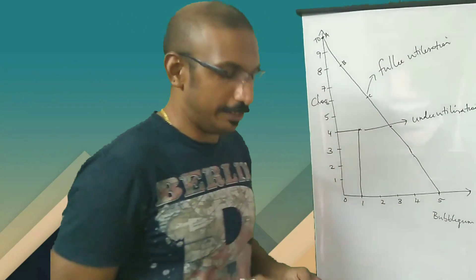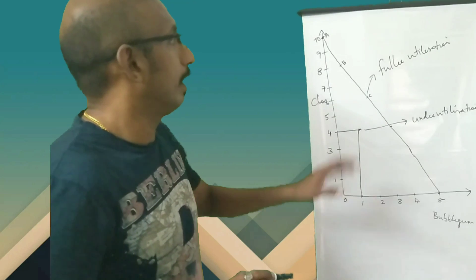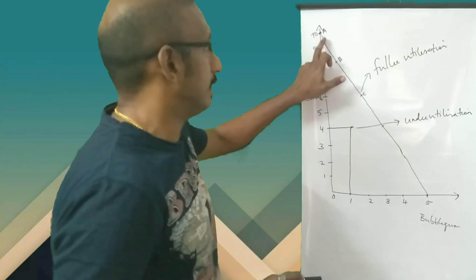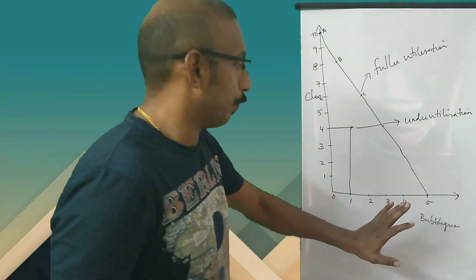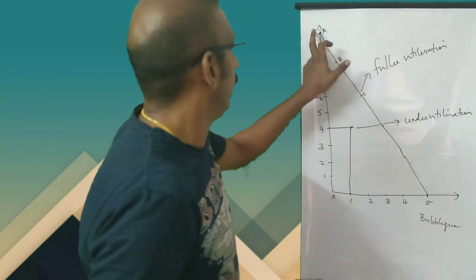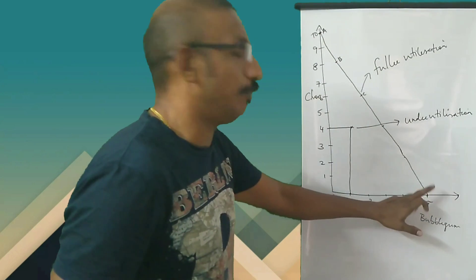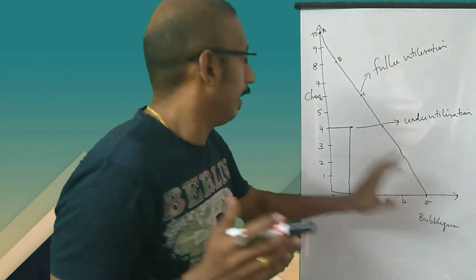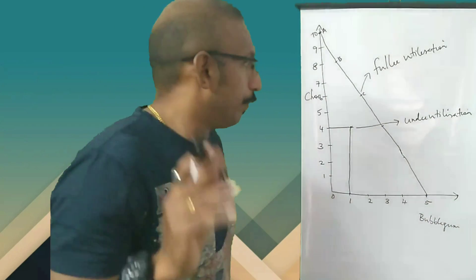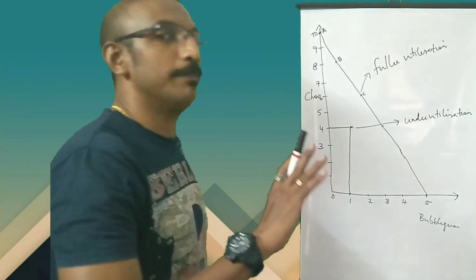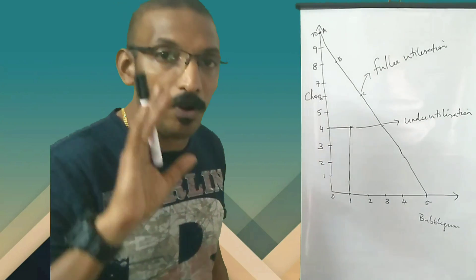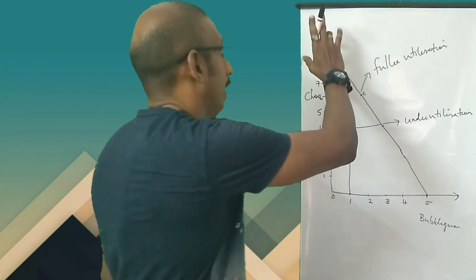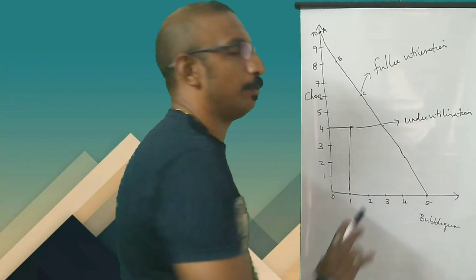If you are at all points on the curve, there is full utilization. If you refer to the definition, it is a curve which shows combinations — like combination A, B, C, D — of two goods such as chocolate and bubble gum, that can be produced by using all the resources, or fuller utilization of resources.